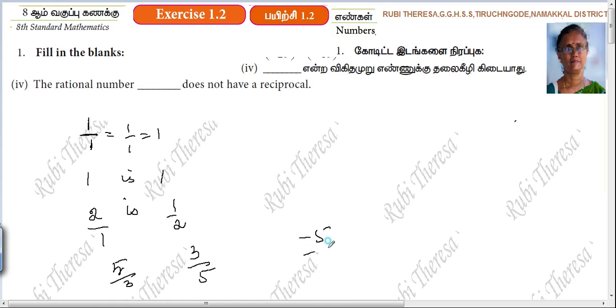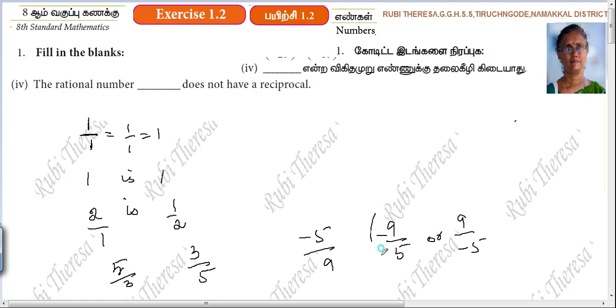Reciprocal of minus 5 by 9 is minus 9 by 5, or 9 by minus 5. Right? And you can see that.